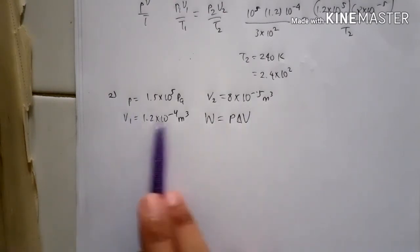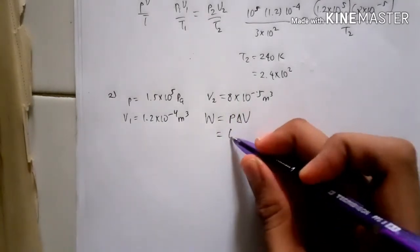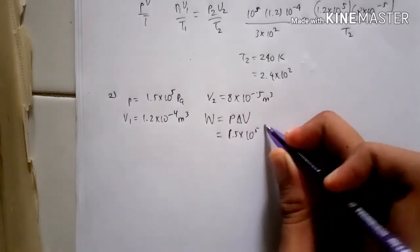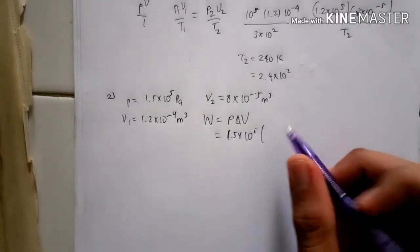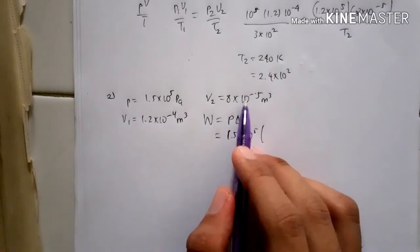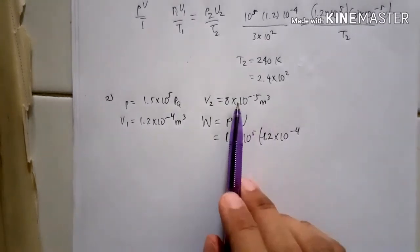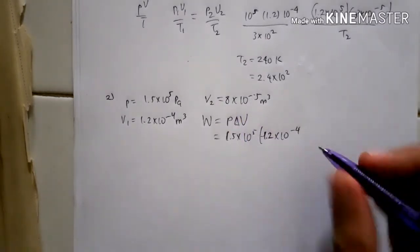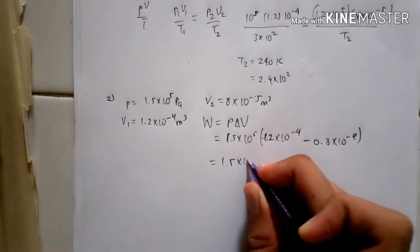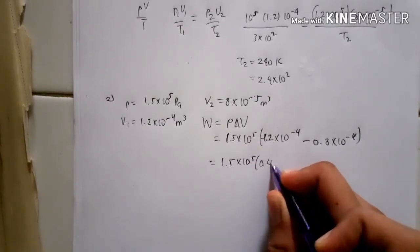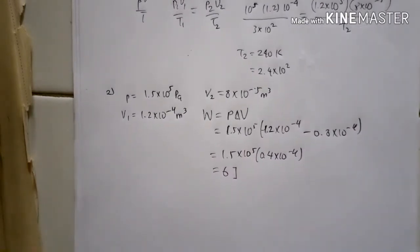Similarly, if volume is constant and pressure changes, you would use W = V times delta P. Here, P is 1.5 times 10 to the power of 5, and delta V equals V1 minus V2 because V1 is larger. That is 1.2 times 10 to the power of minus 4 minus 0.8 times 10 to the power of minus 4, which equals 0.4 times 10 to the power of minus 4. So W equals 1.5 times 10 to the power of 5 multiplied by 0.4 times 10 to the power of minus 4, giving W = 6 Joules.